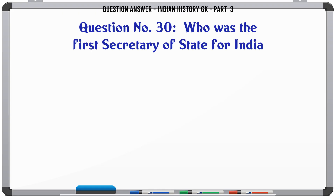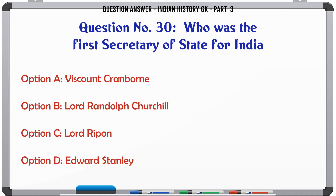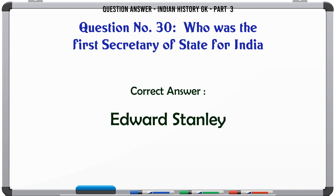Who was the first Secretary of State for India? A. Viscount Cranbourne, B. Lord Randolph Churchill, C. Lord Ripon, D. Edward Stanley. The correct answer is Edward Stanley.